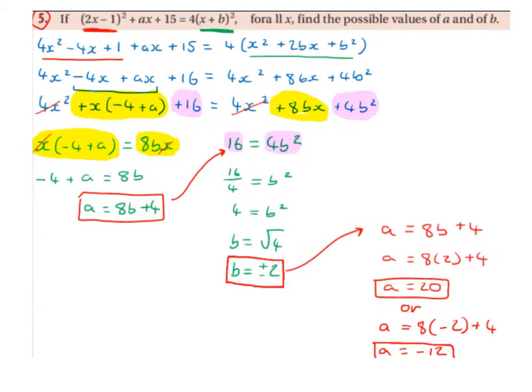Then we're going to put like to like. So x times minus 4 plus a has an x term in it, and 8bx has an x term in it, so we're going to let them equal to each other. Get rid of the x's, we're not interested in those anymore, only interested in the a's and the b's.